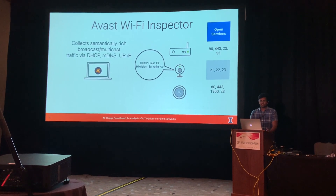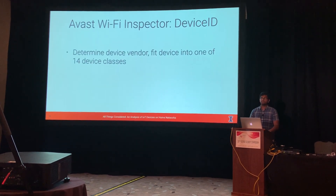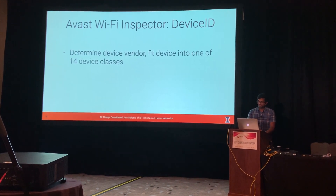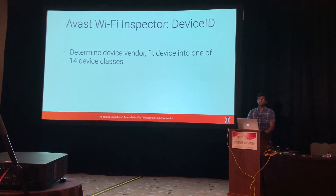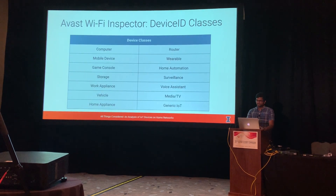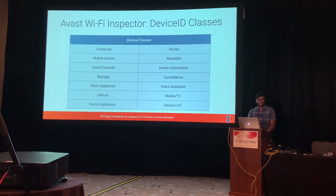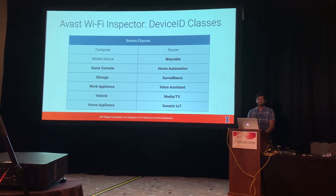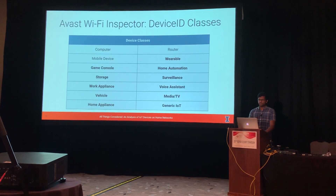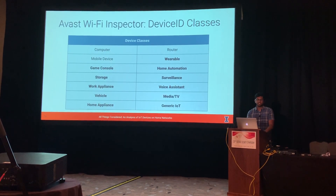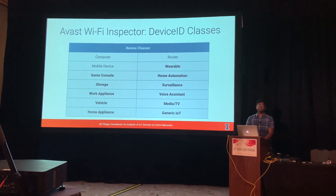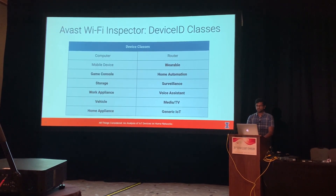It uses all of this application layer data to perform device identification. The goal of device ID, for the scope of this paper and their product, is to put a device into one of 14 different device classes. Of these, we deemed 11 to be IoT devices for the scope of this work. We excluded computers, routers, and mobile devices from our discussion of IoT, but kept them in context of the number of devices in the network as well as the security posture on the network.